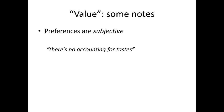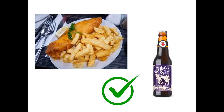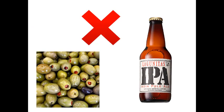We say preferences are subjective — they depend on each person's particular tastes and desires. There's no accounting for tastes; there's no way to assess why people like what they like and don't like what they don't like. For example in the realm of food and drink: I really like fish and chips, vinegar, and a nice stout beer. Now some of those things disgust other people, and then other people like things like olives and pale ales, and those things disgust me.